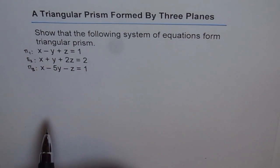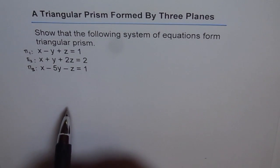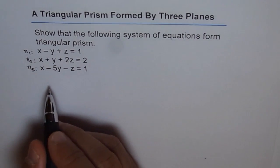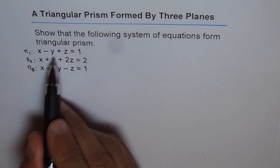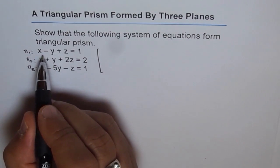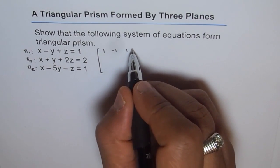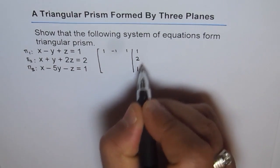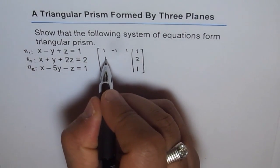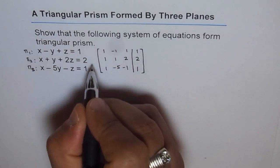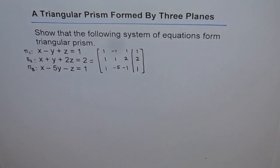Now let's find out what kind of intersection these planes have. I'll adopt the matrix method — using the augmented matrix and reducing the rows. Writing the coefficients of x, y, z: the first row is 1, −1, 1 | 1; the second is 1, 1, 2 | 2; and the third is 1, −5, −1 | 1.